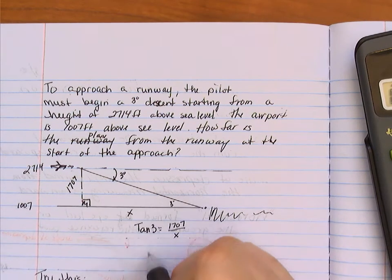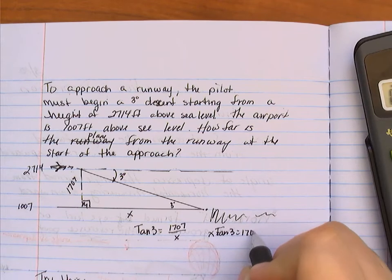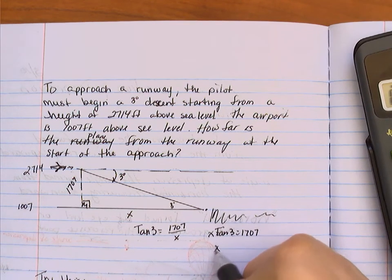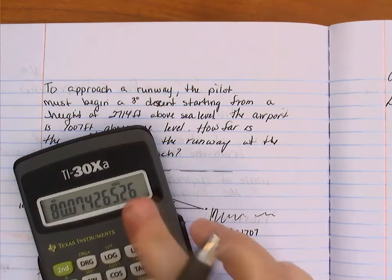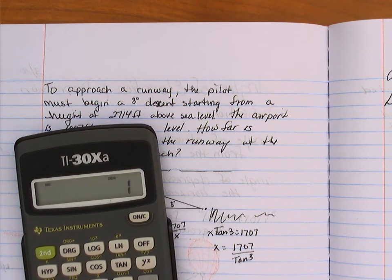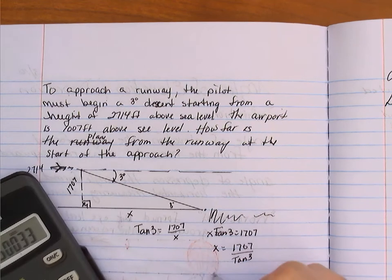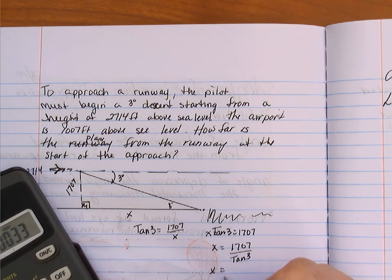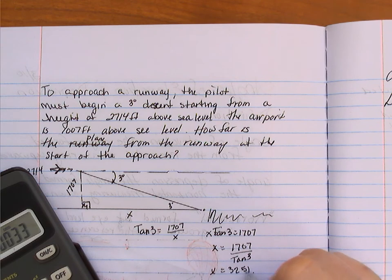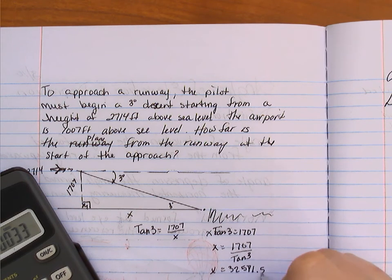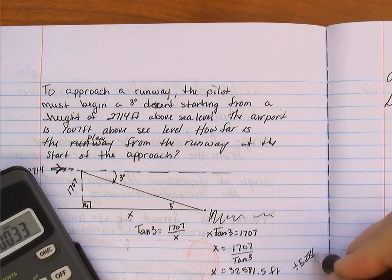And then I'm going to multiply by x. That's going to give me x times the tangent of 3 equals 1707. Then I'm going to divide by the tangent of 3. So x is going to equal 1707 divided by the tangent of 3. I'm going to plug that into my calculator. 1707 divided by 3 tangent. It gives me x is 32,571.5 feet from the runway.